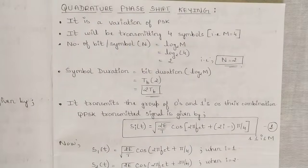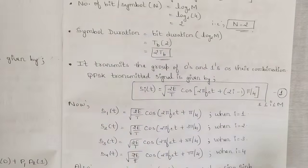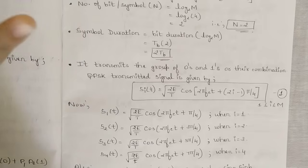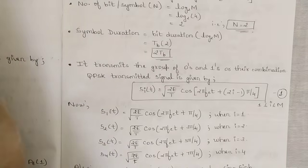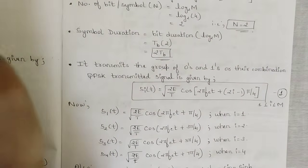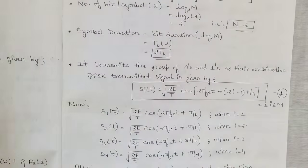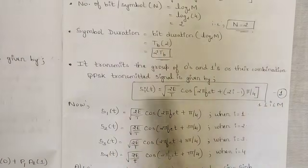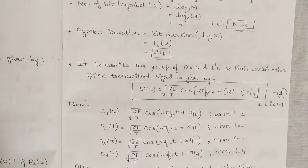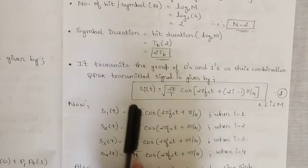QPSK transmits groups of zeros and ones or their combinations. If you make a group of two elements, you get four combinations: zero-zero, zero-one, one-zero, and one-one. That gives four combinations, which is why it is called quadrature. So QPSK is defined as transmitting groups of zeros and ones or their combinations.